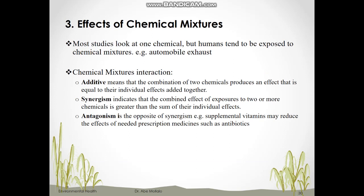The third factor that determines toxicity is a mixture of chemicals. Most studies look at one chemical but in reality we are exposed to chemical mixtures. For example, automobile exhaust is a combination of carbon monoxide, nitrogen dioxide, sulfur dioxide, particulate matter, and many other particles. Toxicologists have observed that when chemicals mix they may produce surprising effects — sometimes their combined effect may be greater, sometimes less than expected. When exposed to two or more chemicals, their combined effects may be additive, synergistic, or antagonistic.